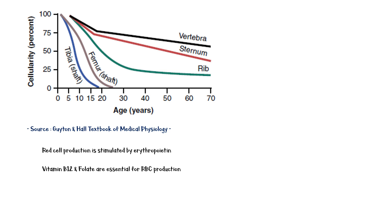For a more comprehensive lecture on red cell production, you can watch my erythropoiesis video — the link is in the description below. The average lifespan of a red cell in a healthy individual is around 120 days, and older red cells are destructed mainly by the spleen.